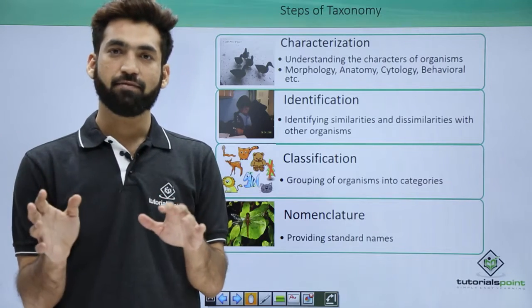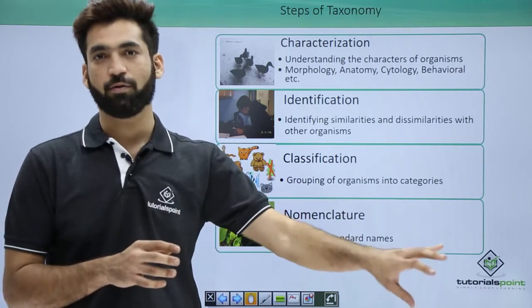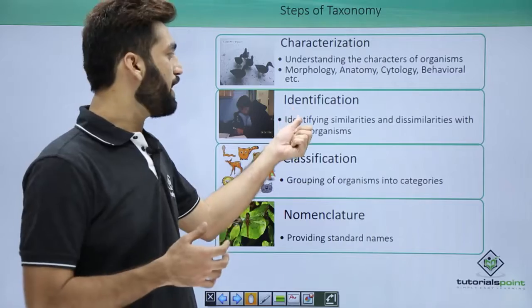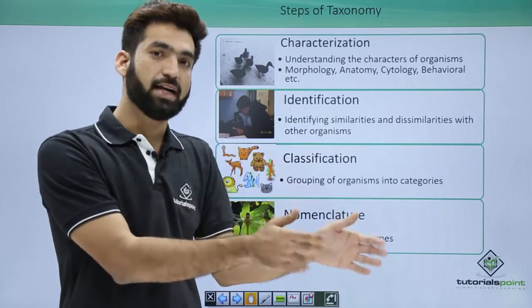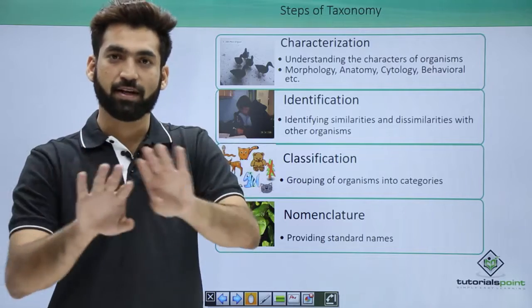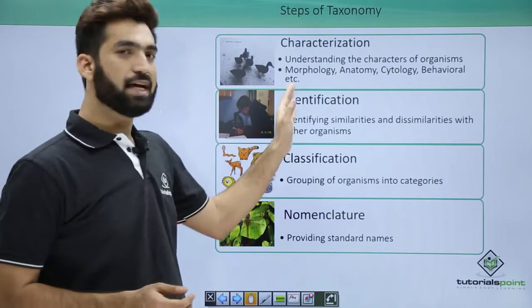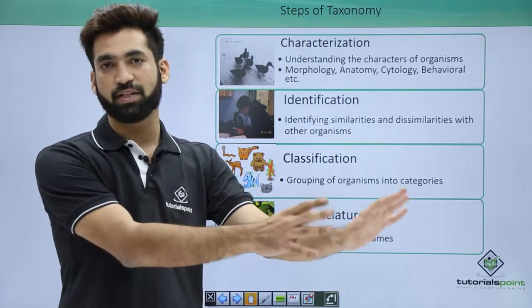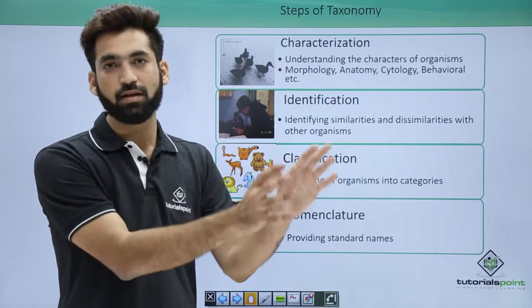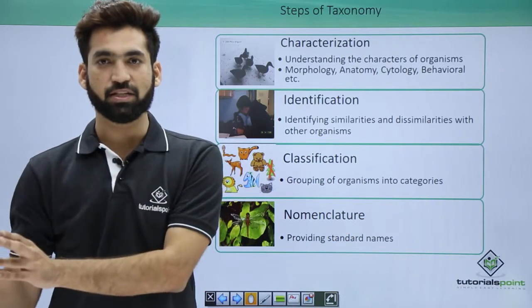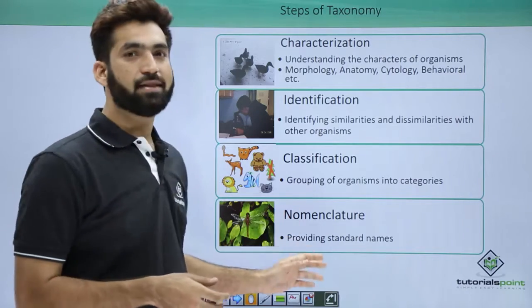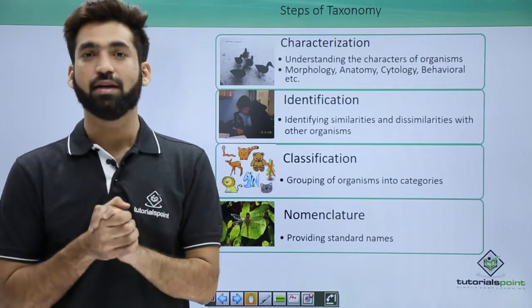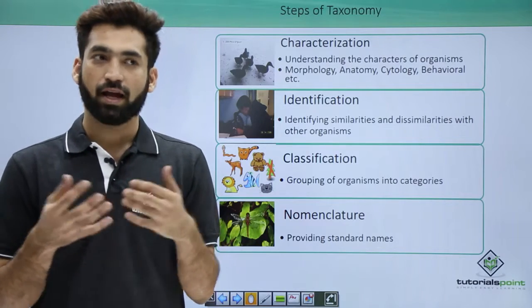Once we figure out that this particular student requires IIT study and this one requires NEET study, we identify other students with the same needs and put them into two groups. After identifying, we classify them — this bunch is looking forward to the NEET exam and this bunch to the IIT exam. Then we name them: this is the IIT batch and this is the NEET batch. This is how layman classification works.